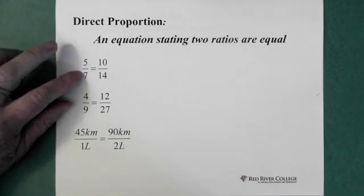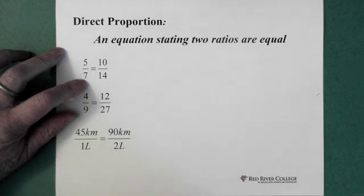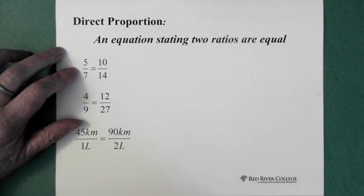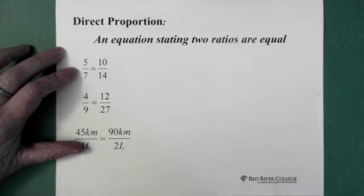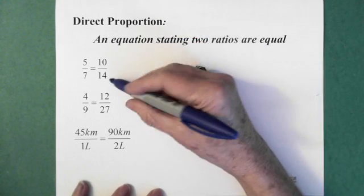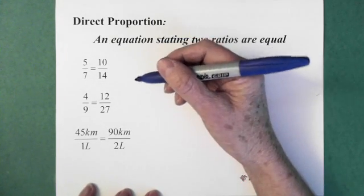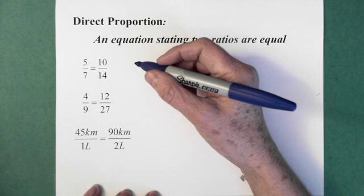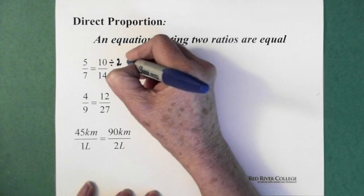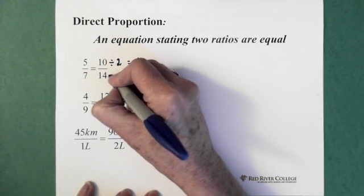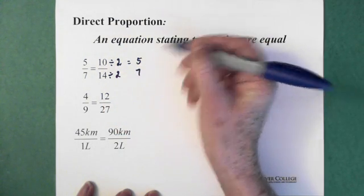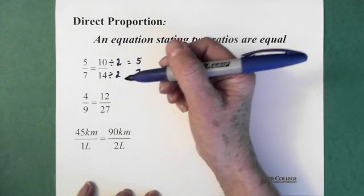So here we have 5 divided by 7 equals 10 over 14. Now we could look at it and say, well, are you sure that it actually equals one another? So when we look at this fraction here, 10 divided by 14, what we can do is ask ourselves, what are they both divisible by? And we can see that both are divisible by 2. So if I divide this by 2, I end up with 5. And if I divide the 14 by 2, I end up with 7. So then this, in fact, does equal the 5 over the 7.